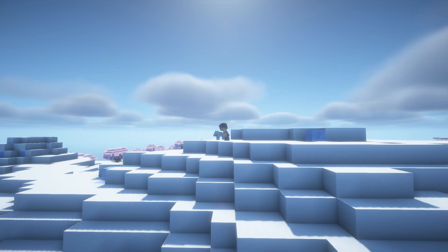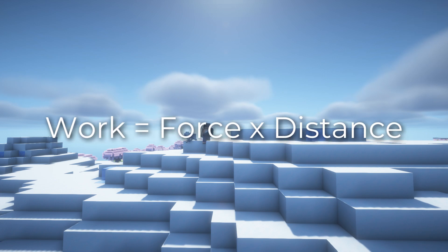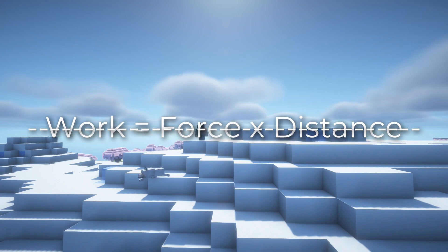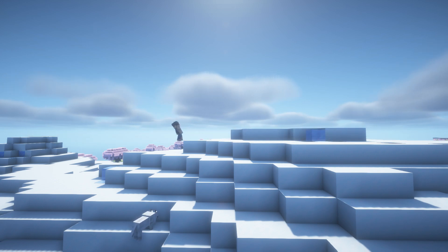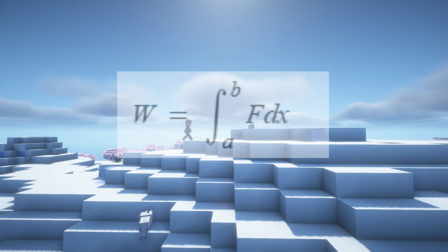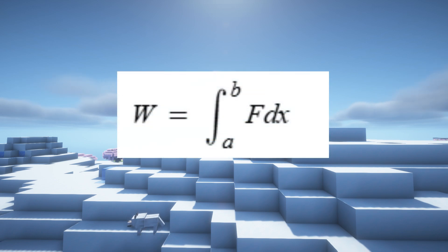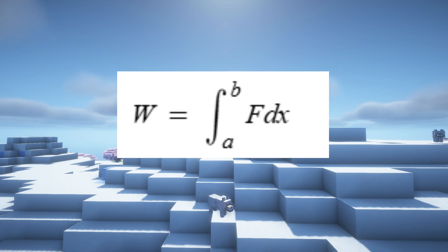Now before we learned that work equals force times distance, but this is not really the case — well, at least not always. This is only true if the force applied is constant over the distance. The true formula for work actually equals the integral of force with respect to distance, so W equals the integral of F dx.